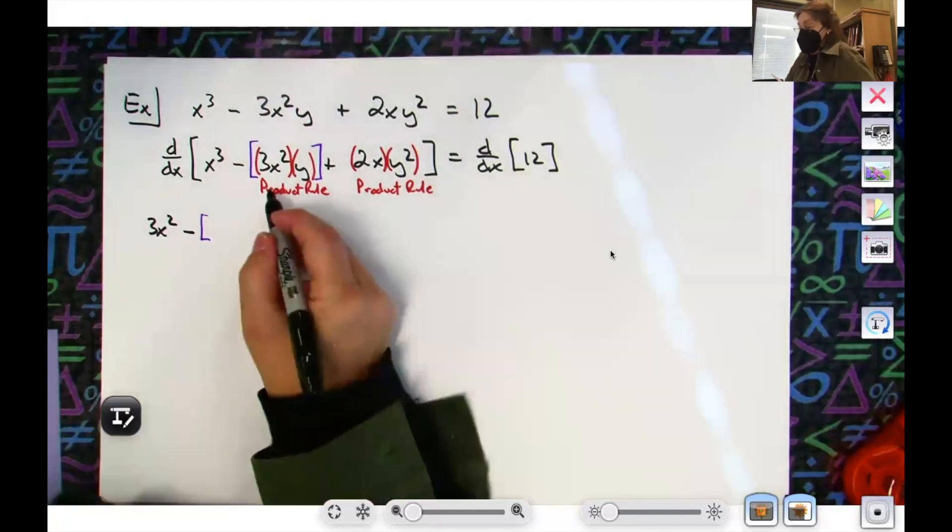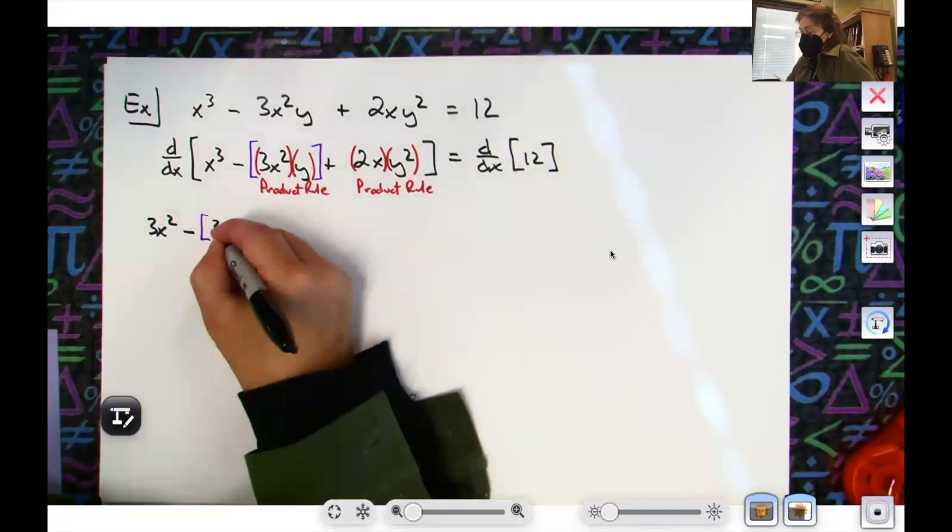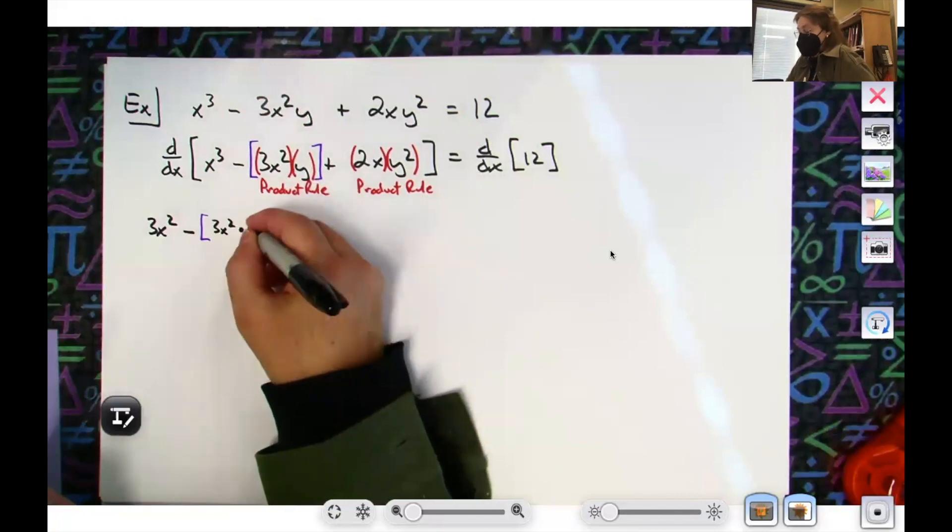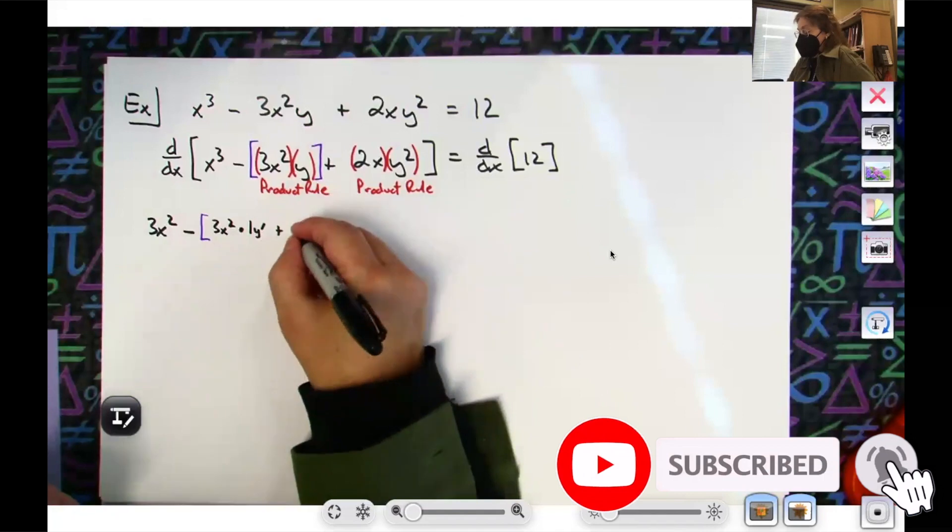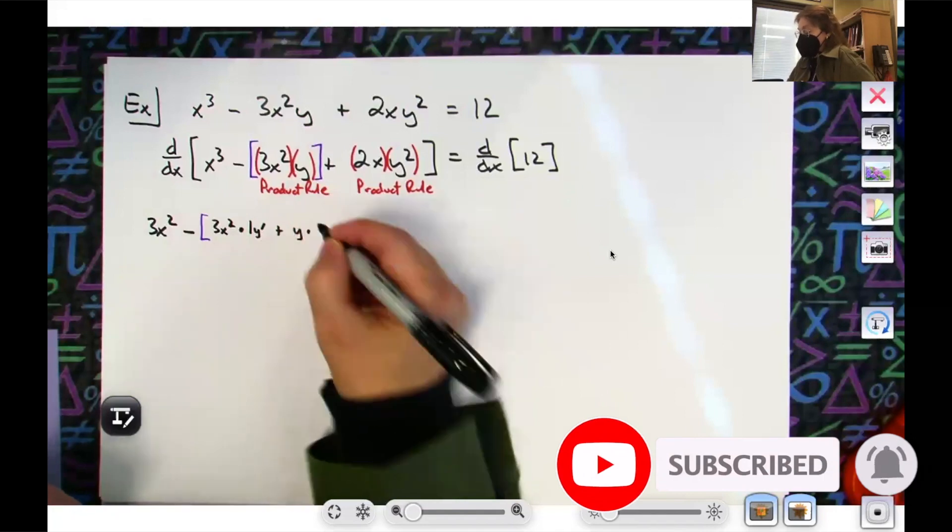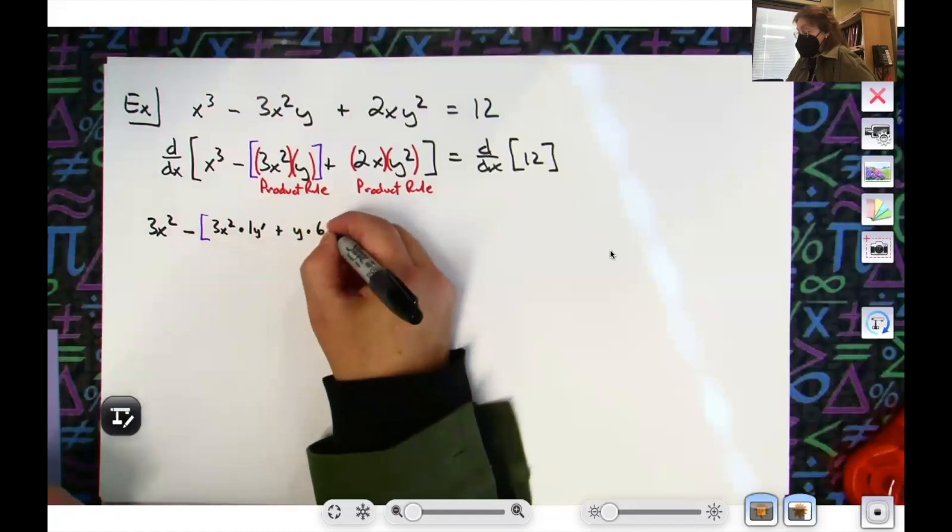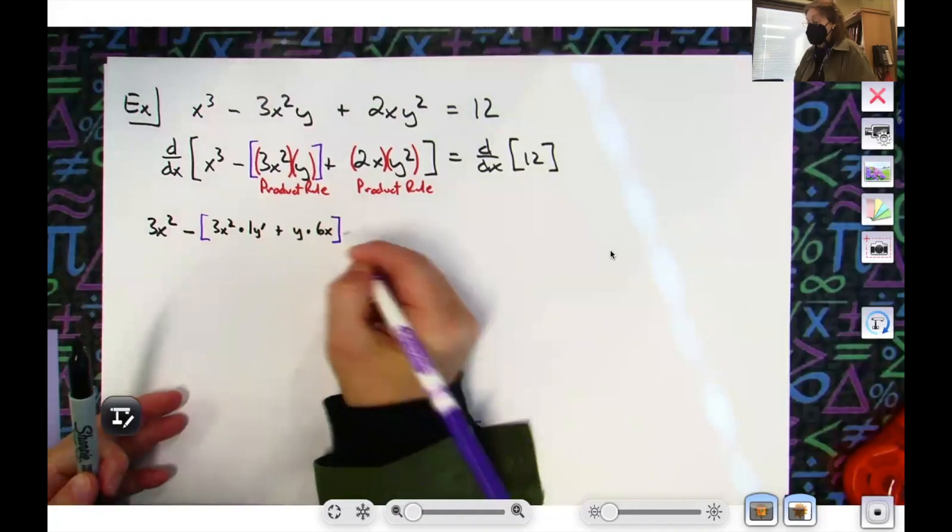So I'm literally going to put those in, so I'm going to put my minus, then I'm going to add that square bracket, okay. Now I'm going to start my product rule. So the first term, 3x² times the derivative of the second, so derivative of y is 1, and then slap in your chain y', plus the second term y times the derivative of the first term which is 6x. Okay, now I've just done that, close my parentheses because I'm done.